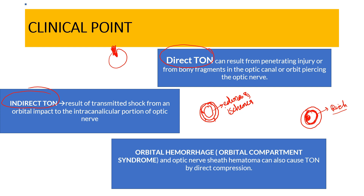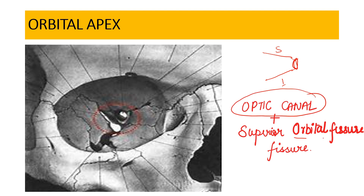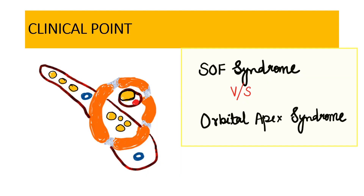The orbital apex is the apical area in the posterior aspect of the orbit where all four walls — superior, inferior, lateral, and medial — converge. The important structures at the apex include specifically the optic canal and the superior orbital fissure. This is clinically important because of conditions like superior orbital fissure syndrome and orbital apex syndrome.